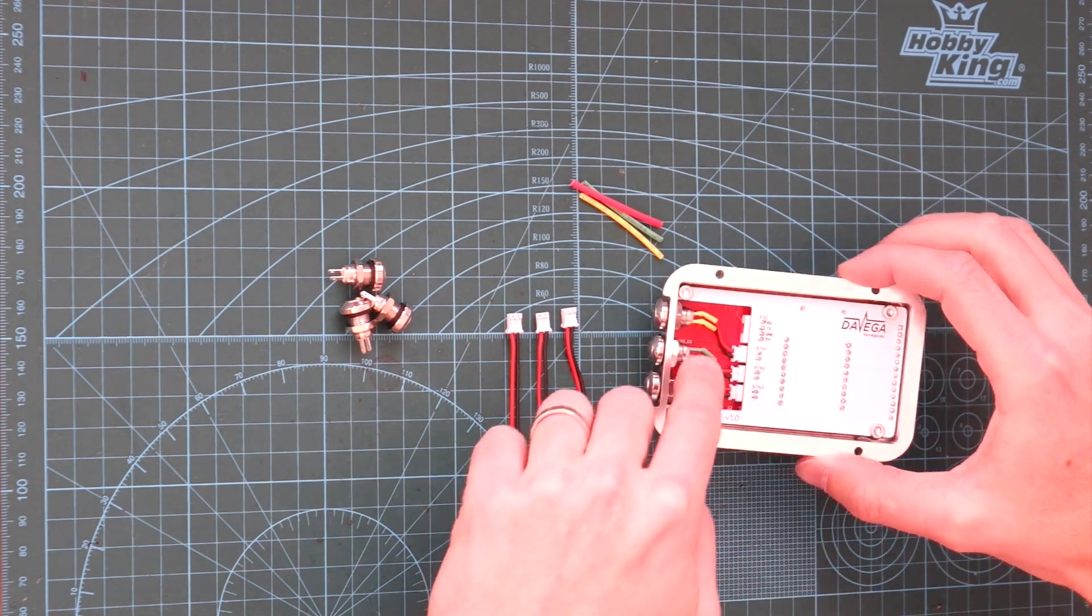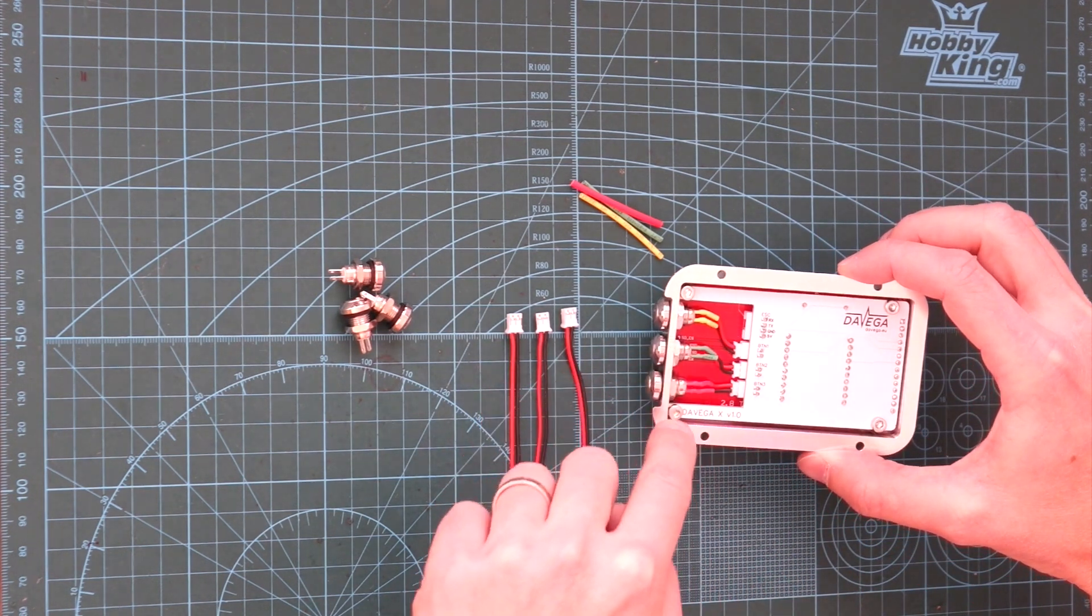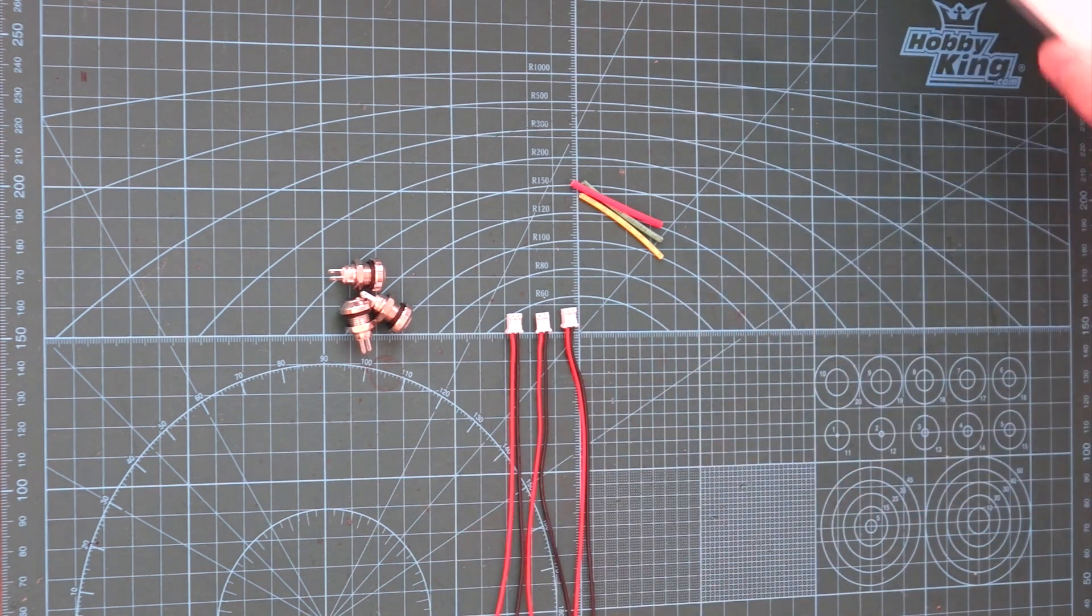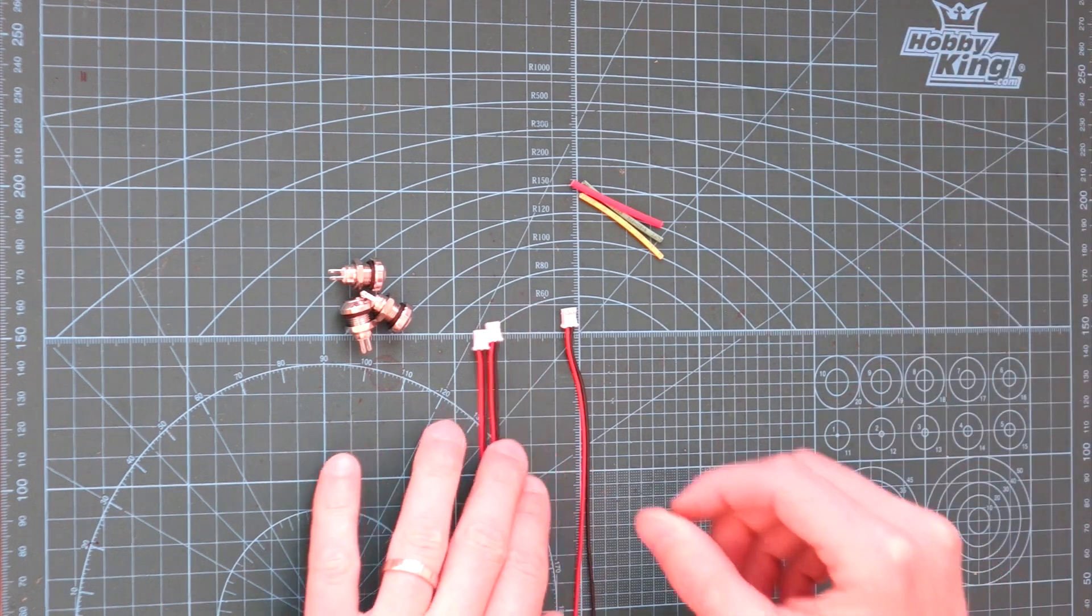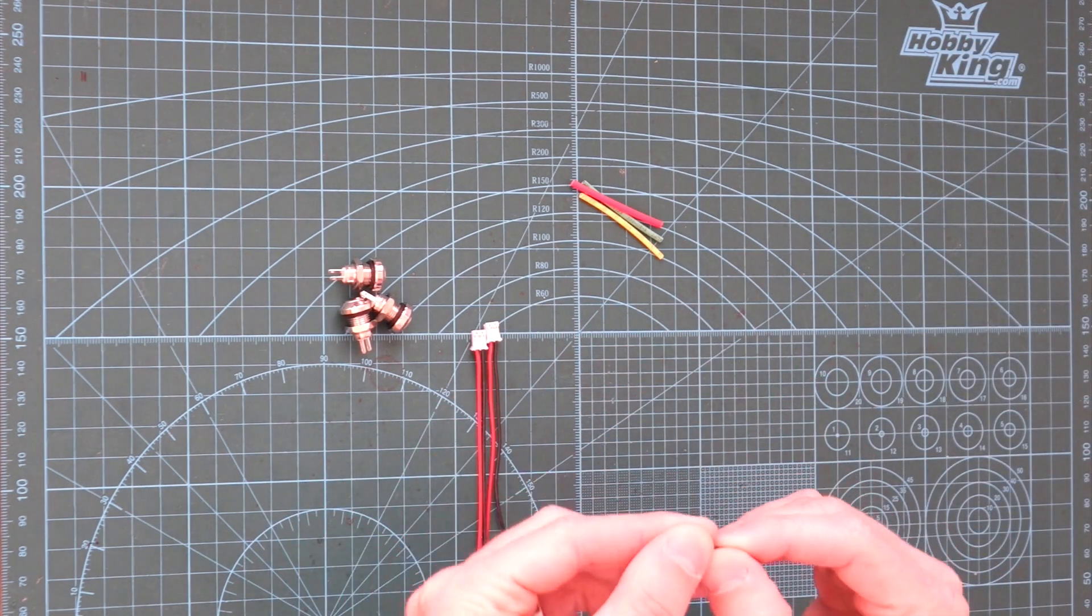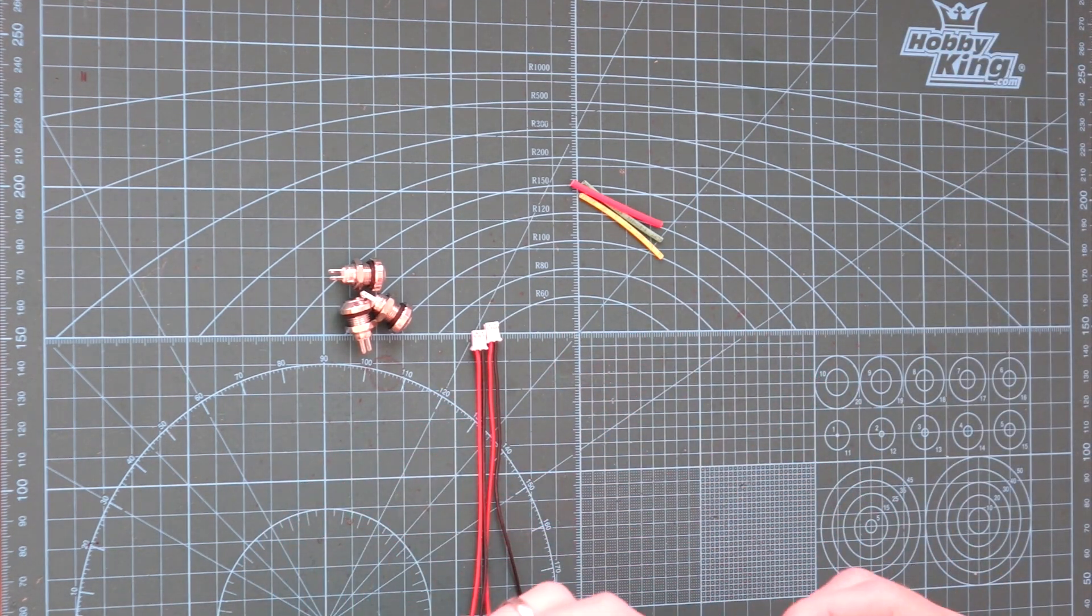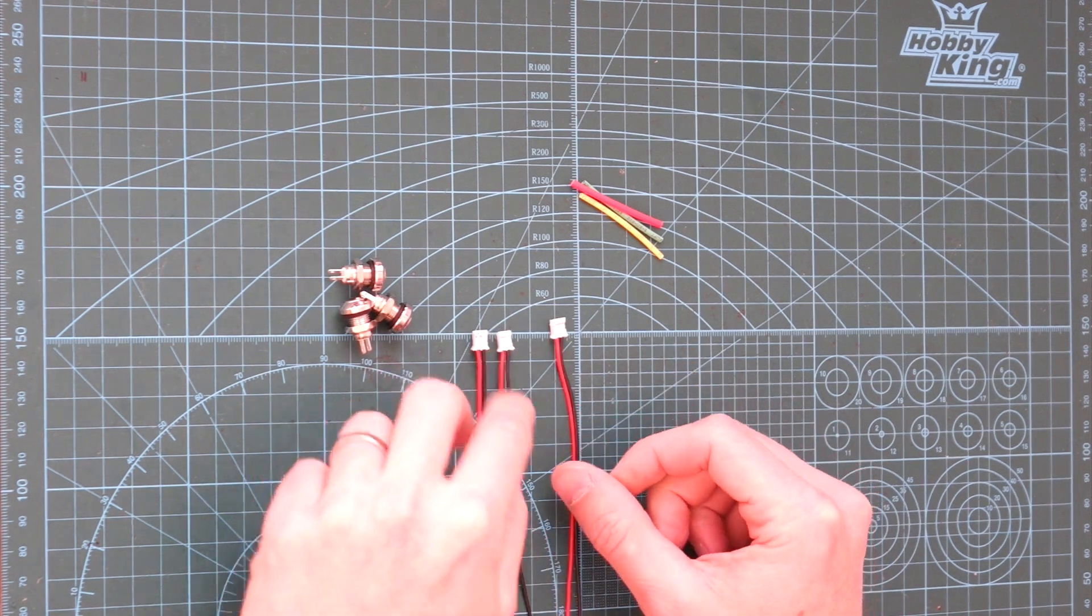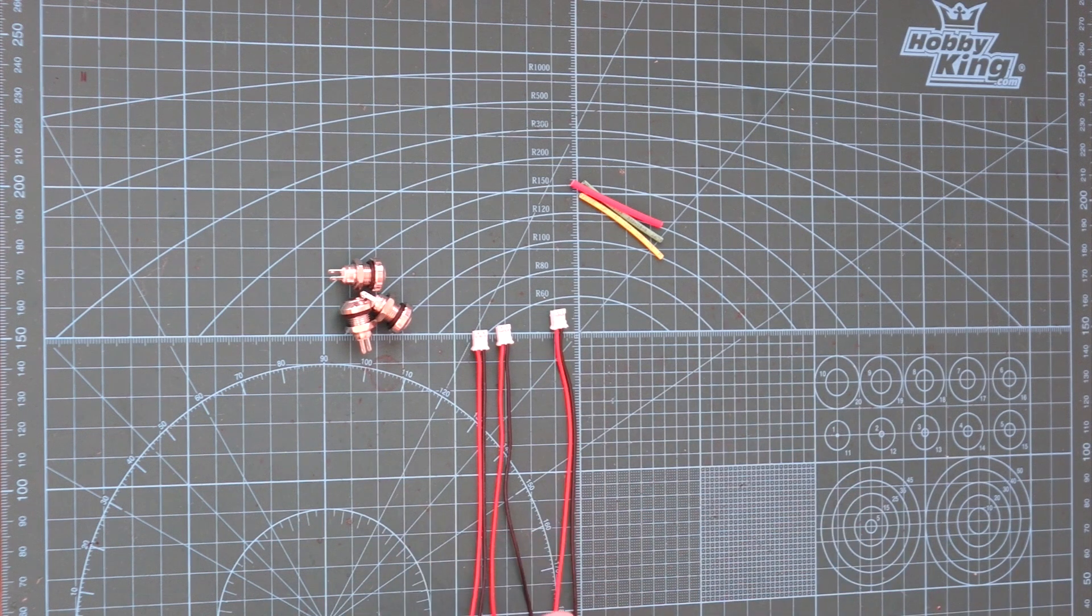So yeah, this one needs to be slightly longer than this one. And this one is the shortest. So the lengths that seem to work pretty well are 20mm for the longest one. Then 18mm for the middle one. And 16mm for the shortest.